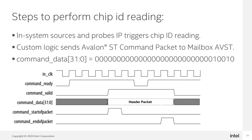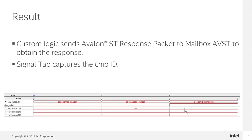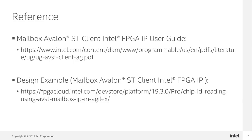Once the In-System Source and Probe IP triggers chip ID reading, the custom logic will send an Avalon SD IP command packet by following the timing diagram as shown. When command ready is asserted, the custom logic will assert command valid, command start of packet, and command end of packet, along with command data of 12 hex. Then the custom logic will receive the response. Once the response is ready, Signal Tap will be used to observe the response obtained. For more information about the IP and the design, you may refer to the user guide and design example as shown in the link.